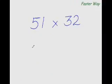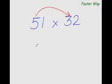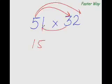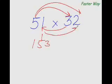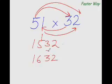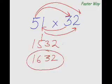Now let me show you the faster way of multiplying any two-digit number with any other two-digit number. Watch me. This is what my answer is: 1632. Have you understood how I have done this?